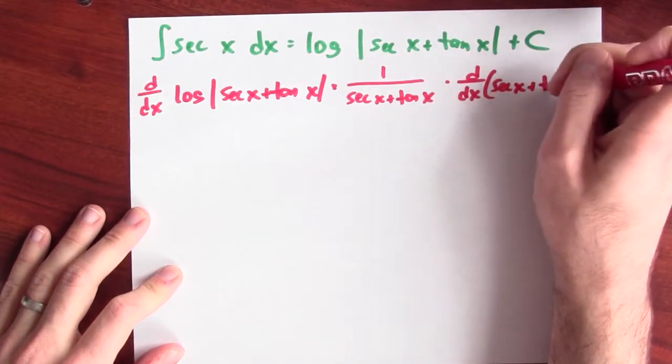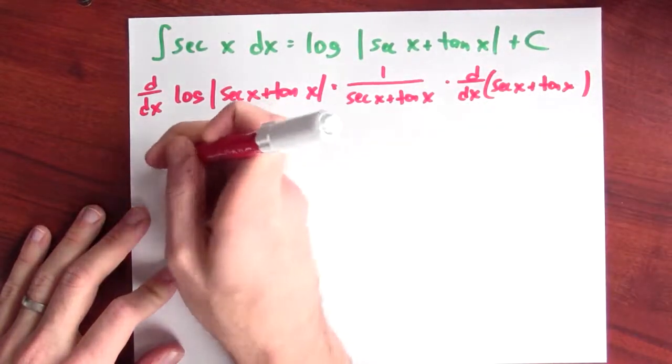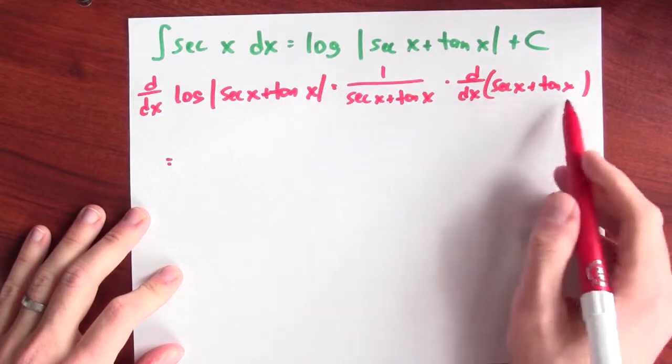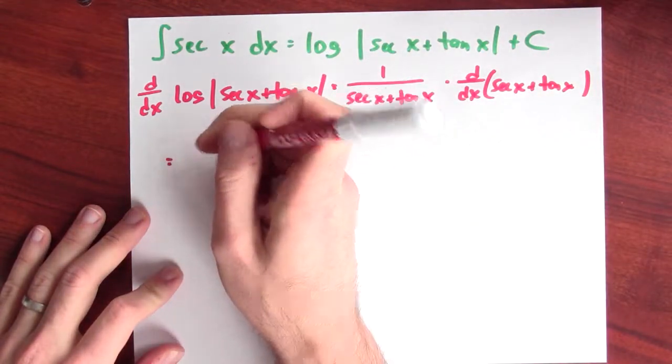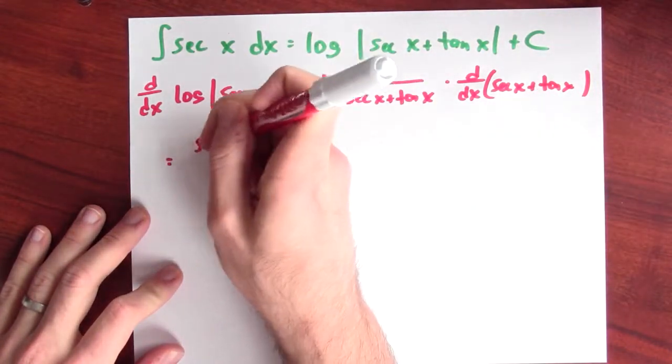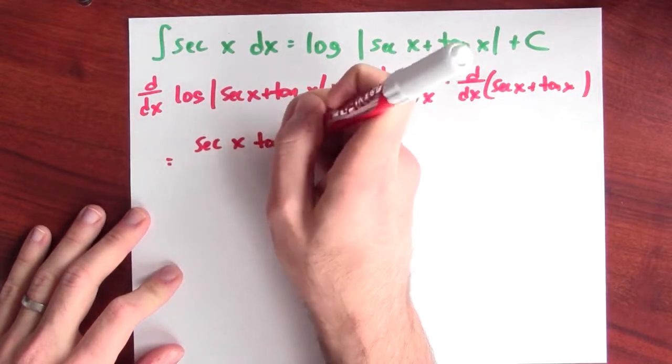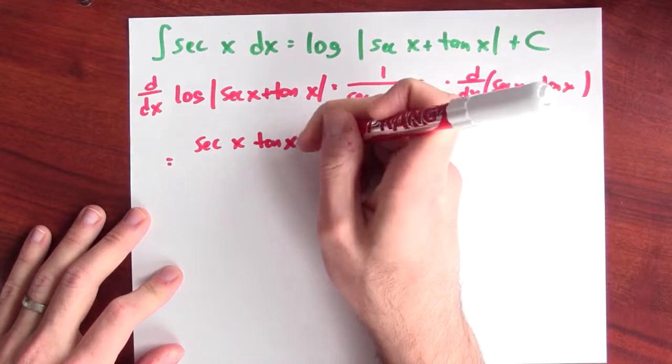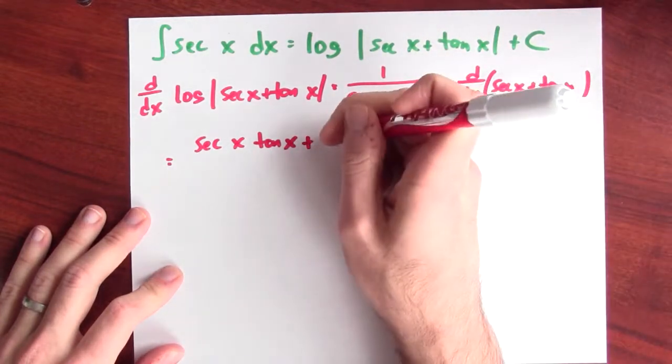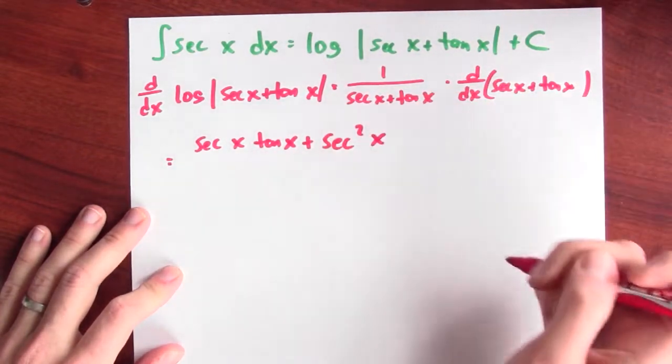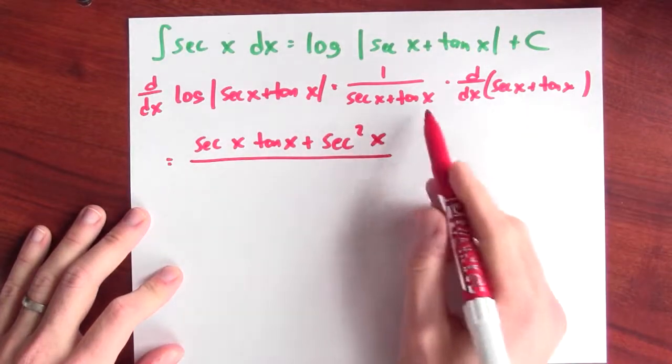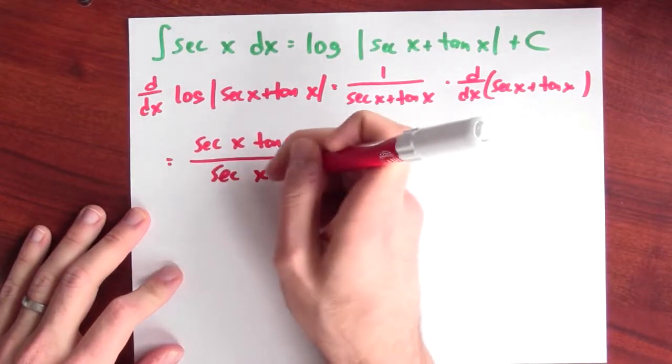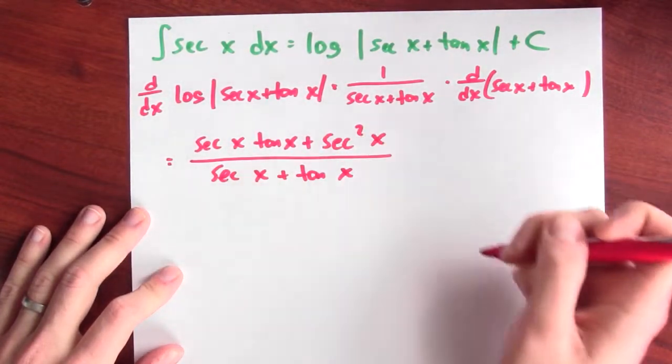This is really the chain rule in action. Now what's the derivative of this sum? That's the sum of derivatives. The derivative of secant is secant x tangent x, plus the derivative of tangent is secant squared x. And this is divided by secant x plus tangent x.